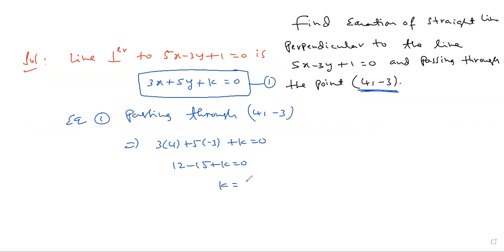k is 3. Now 3x plus 5y plus 3 equal to 0. Okay, so put k equal to 3 in equation one.